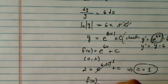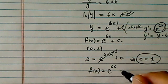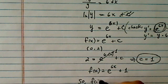Now our function is complete. f of x is equal to e to the 6x plus 1. So f of 1 is e to the 6 plus 1.